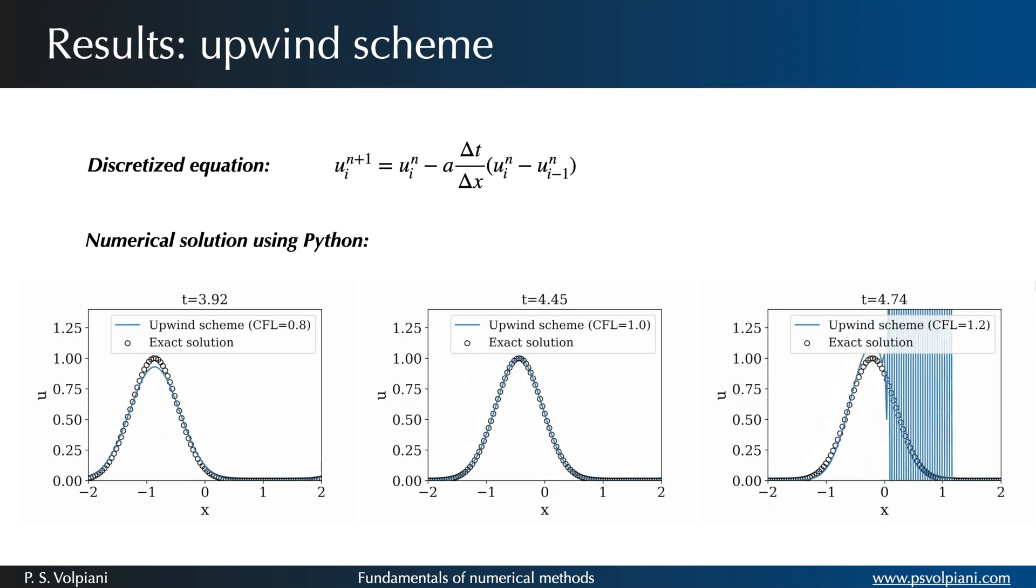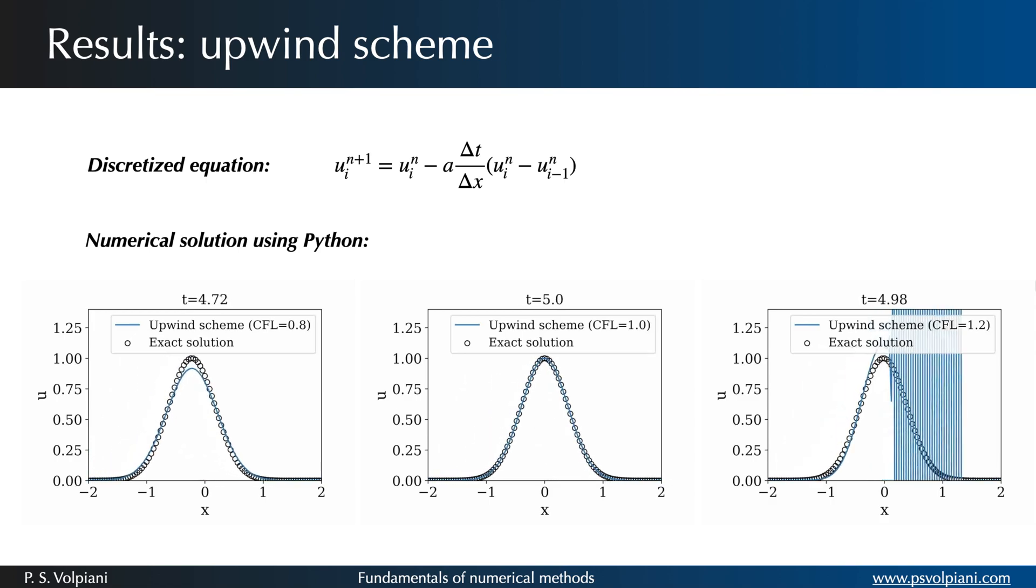For simulation with CFL equals 0.8 the solution is stable but it attenuates over time. If CFL equals one the amplitude of the gaussian distribution is constant over time and is equal to its initial value.